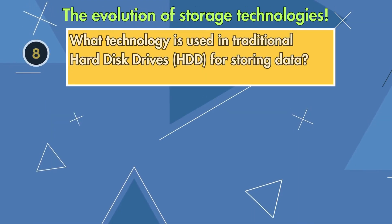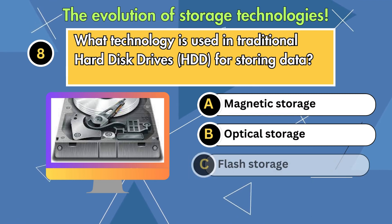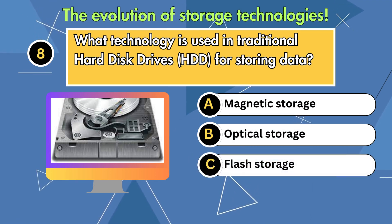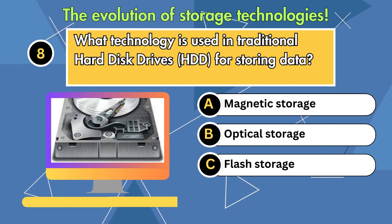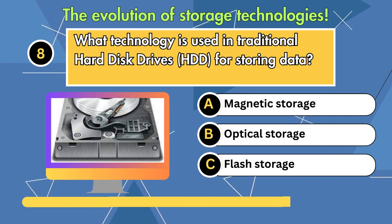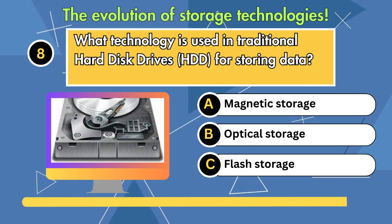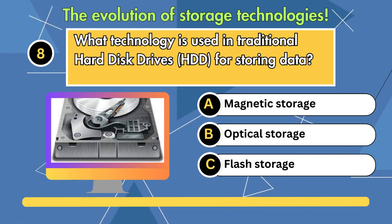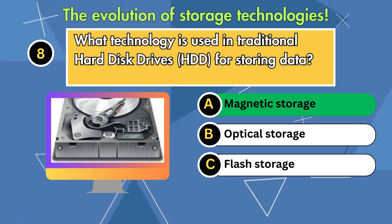What technology is used in traditional hard disk drives (HDD) for storing data? Option 1: Magnetic storage. Option 2: Optical storage. Option 3: Flash storage. Answer is magnetic storage.